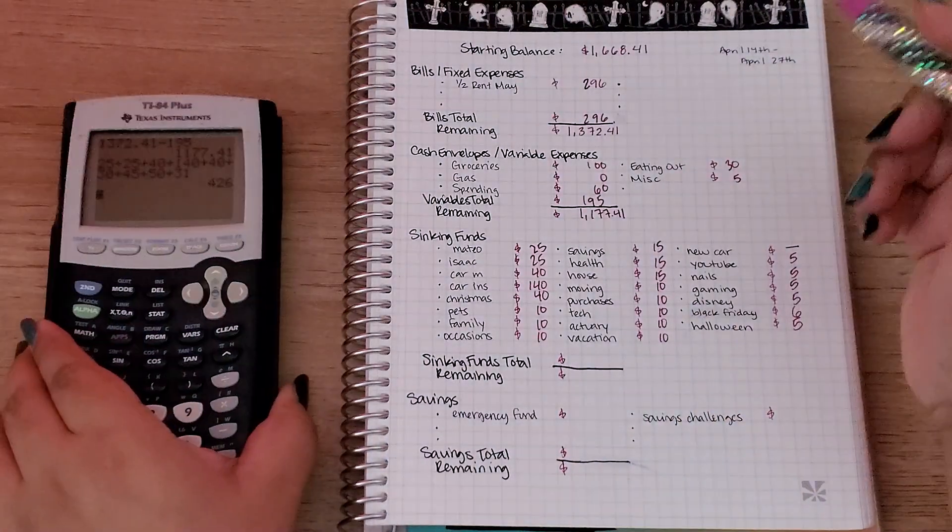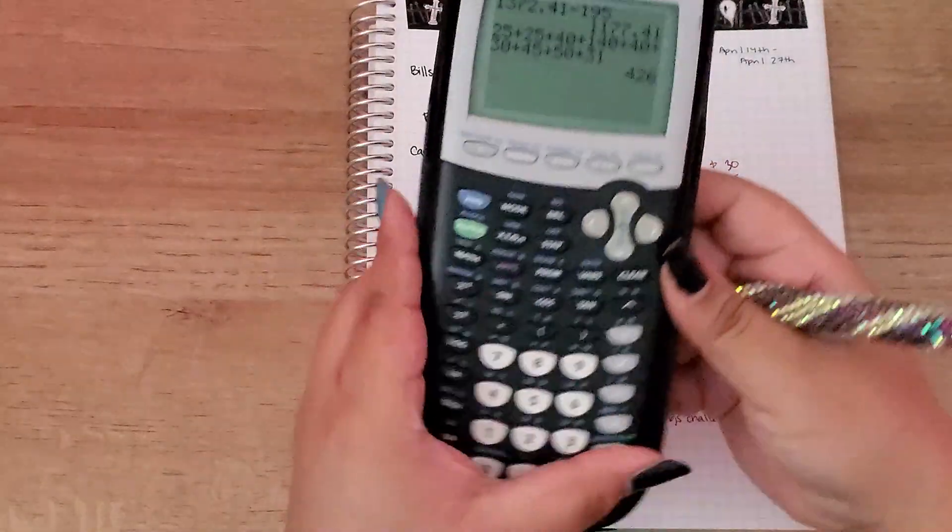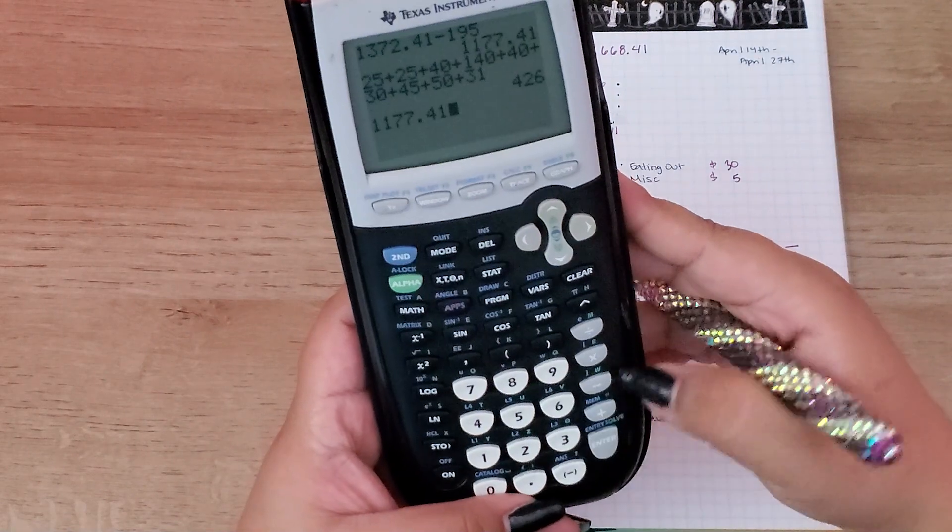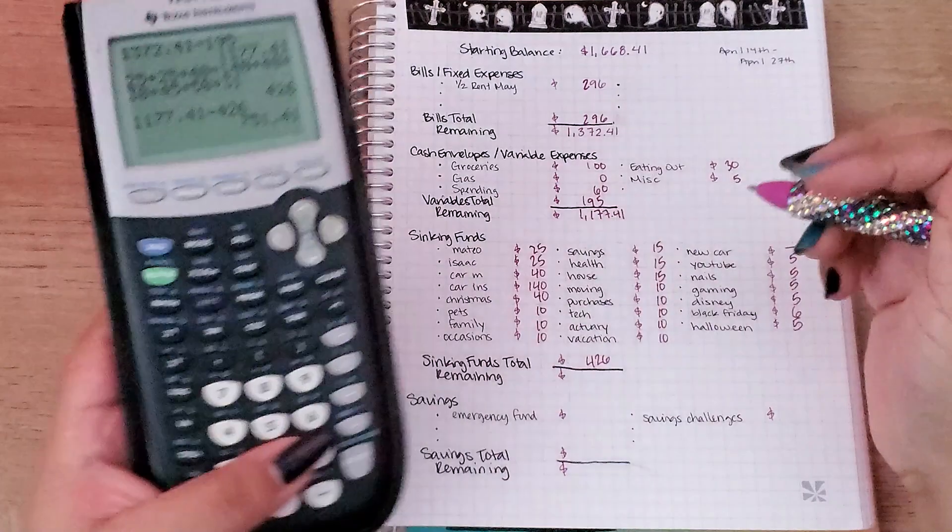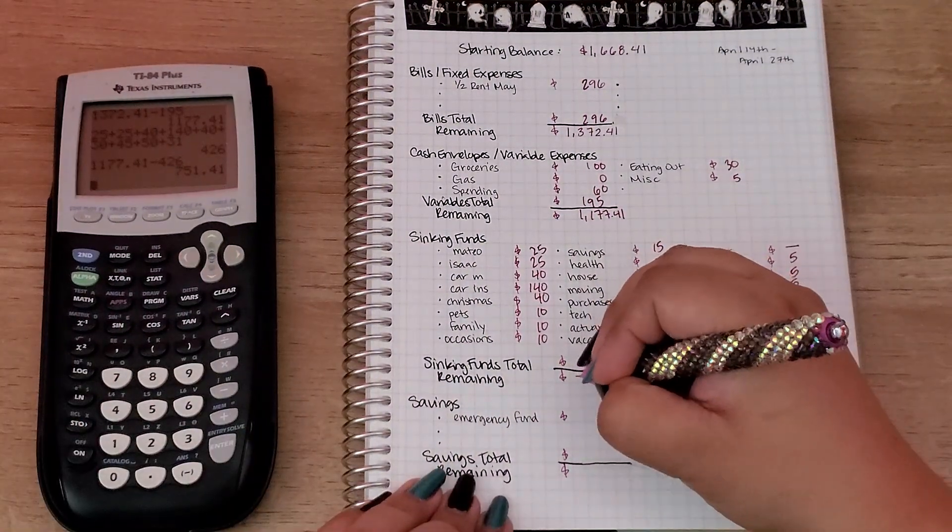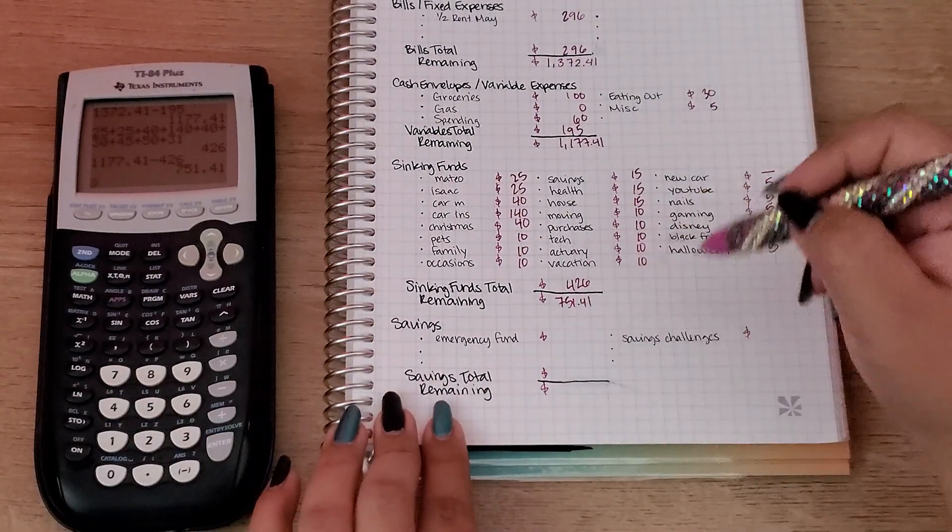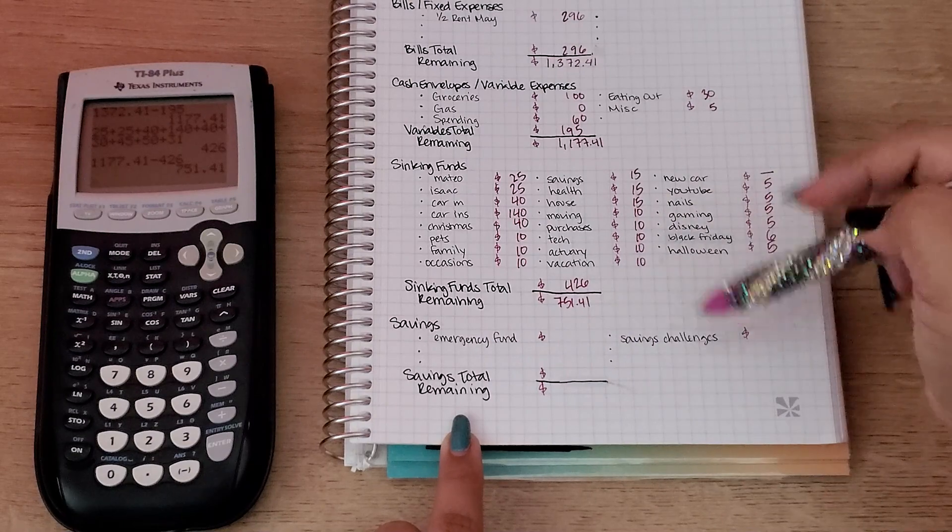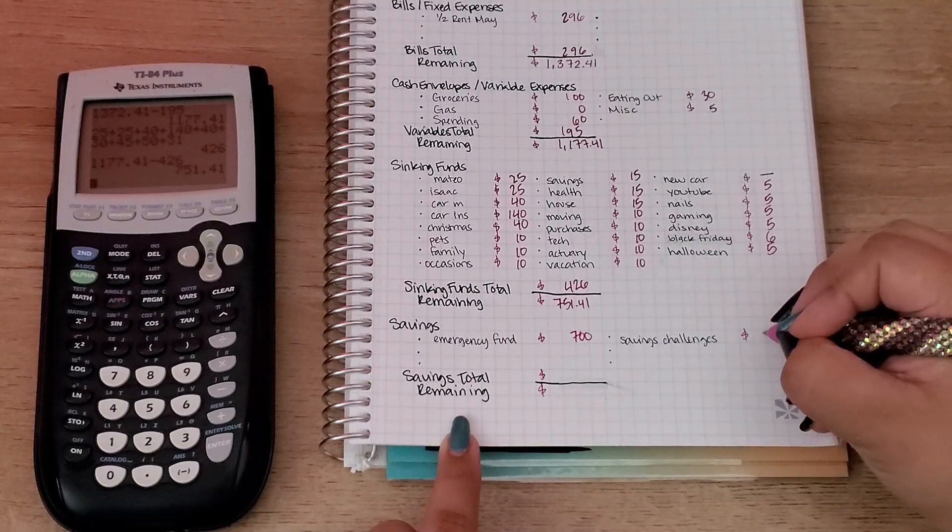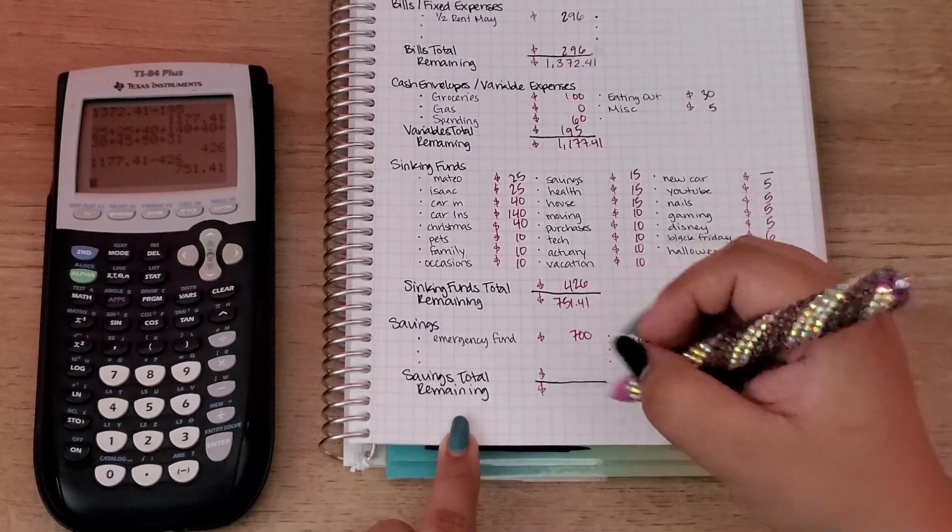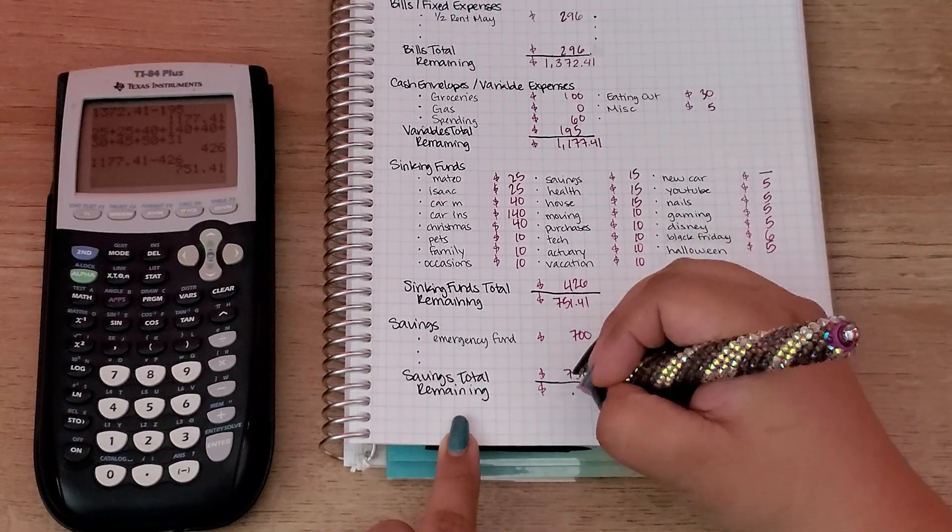So that should be all the amounts, let me total this up. So the total for this is $426. If I subtract that from the $1,177, I get $751.41. Now on to my savings, which is my emergency fund and my savings challenges. My emergency fund is going to be getting $700, and then my savings challenges are going to get the extra $51. So that's $751, and my remaining is going to be $41.